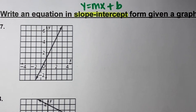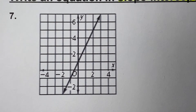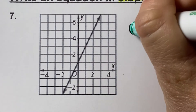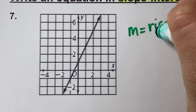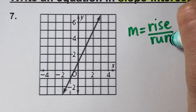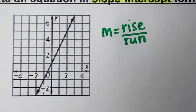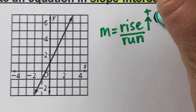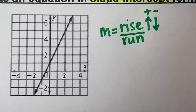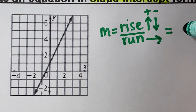I'm going to zoom in to our first example here for number 7. Looking at this graph, if we want to find the slope, slope is going to be our rise over run. We need to pick two points and identify what the rise over run is. Remember, rise — if you're going up, it's a positive slope; if you're going down, it's a negative slope. And run is always to the right.